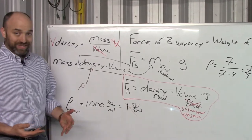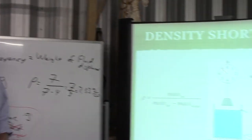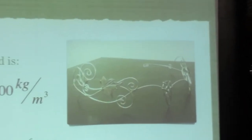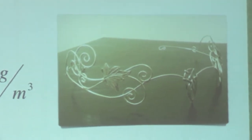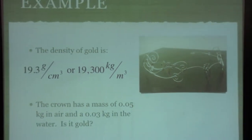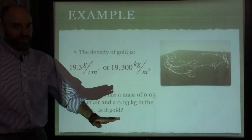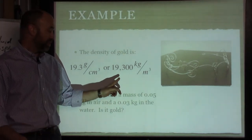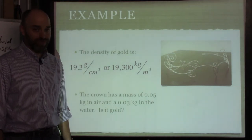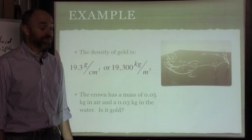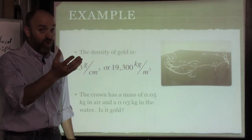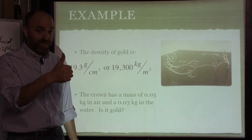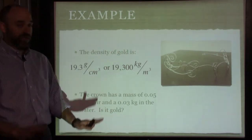There's the crown the king had. As a side note, the density of gold in chemistry units is 19.3 grams per centimeter cubed; in physics units it's 19,300 kilograms per meter cubed. Is that more or less dense than water? The density of water is 1,000 — gold is 19,000, so gold is much more dense than water. If you drop gold in a bucket of water, it sinks. That follows the rule of thumb: more dense things sink.